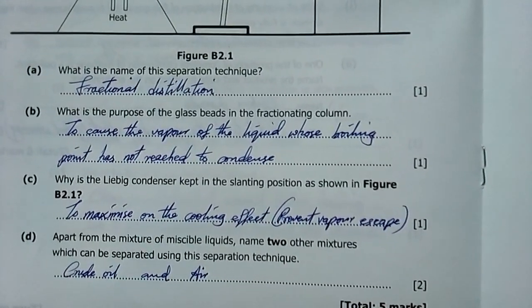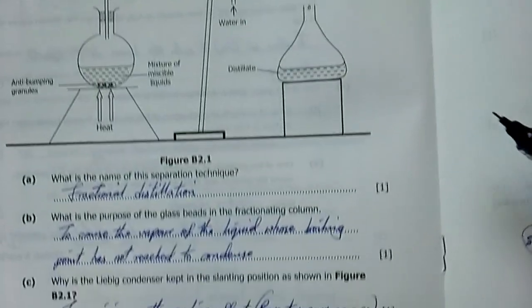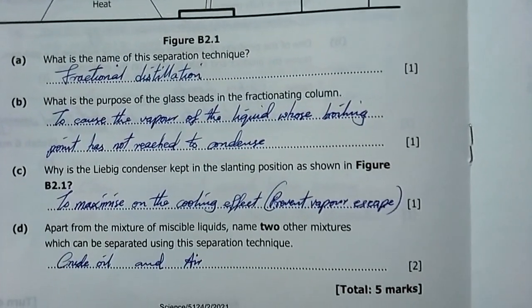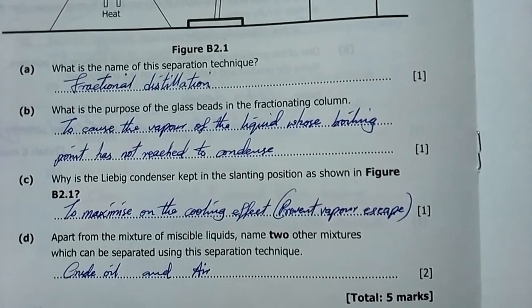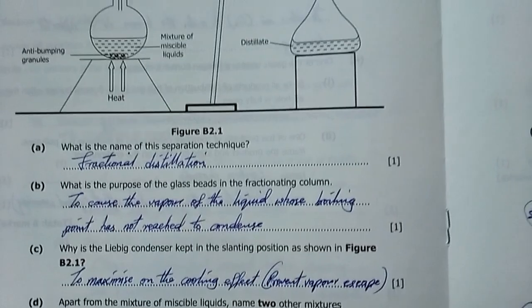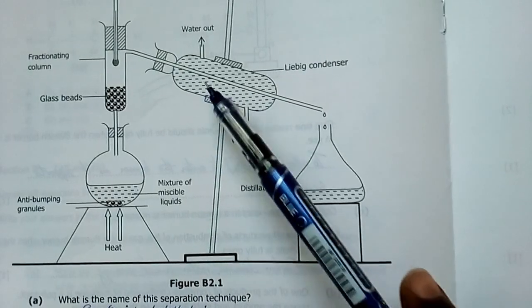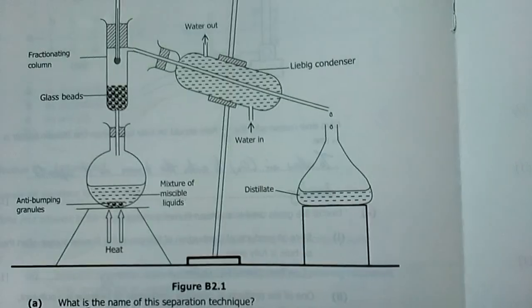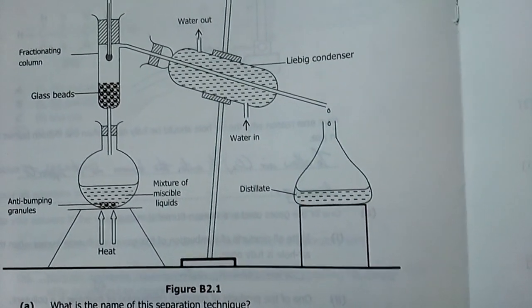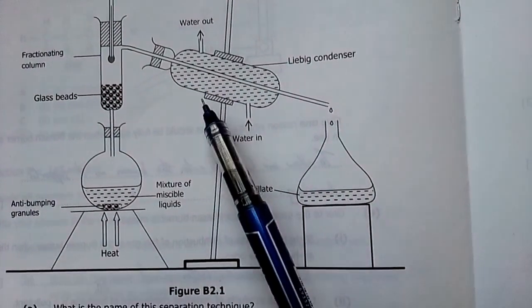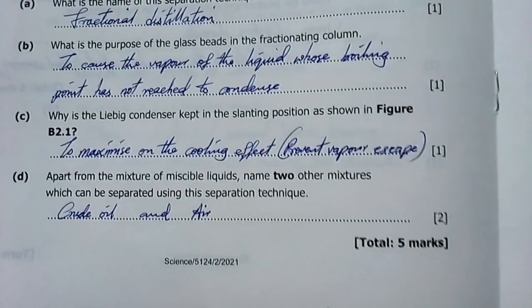Why is the Liebig condenser kept in a slanted position as in the figure? The answer is to maximize on the cooling effect, therefore prevent the escape of vapor. Water flows opposite, therefore this opposite flow is referred to as the counter current to the flow of vapor in the tube. This maximizes cooling and prevents the escape of vapor. Because if it was facing upwards like that, vapor would easily go up.